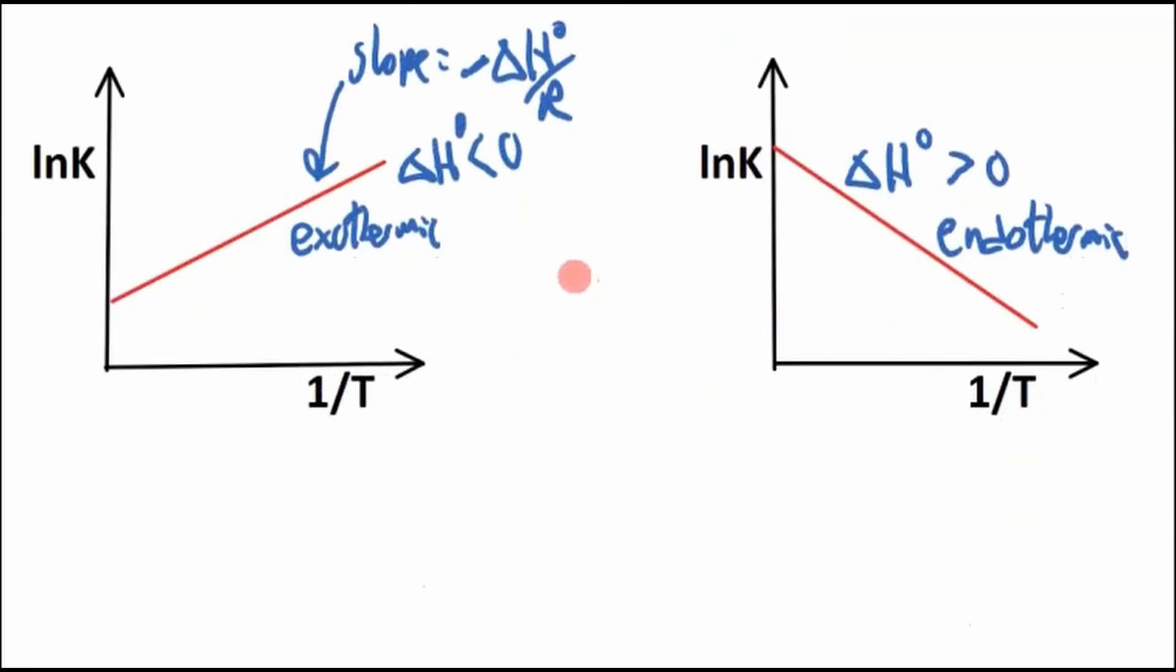Now what's happening in terms of the reaction? Well, let's say we have some A is in equilibrium with B. It doesn't matter what these are. If we increase the temperature, this whole thing gets smaller. That means ln K, which is related to K, goes down.